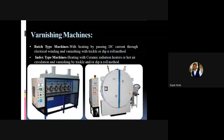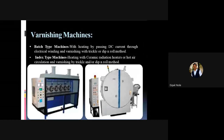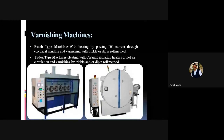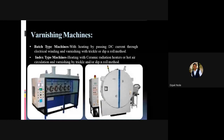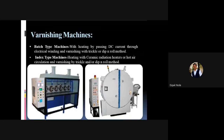The next machine is the varnishing machine, available in two types: batch type and index type. The batch type machine heats by passing DC current through the electrical winding and applies varnish using trickle, dip, and roll methods. The index type machine uses ceramic radiation heaters or hot air circulation for heating, also applying varnish by trickle, dip, and roll methods.